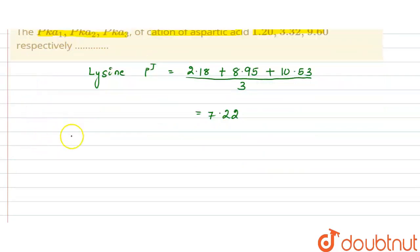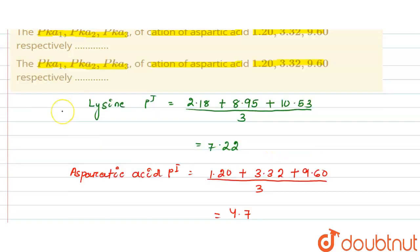Divided by 3. So answer is 4.7. Okay, so right now we have to calculate average isoelectric point.